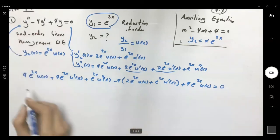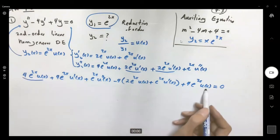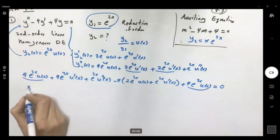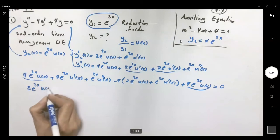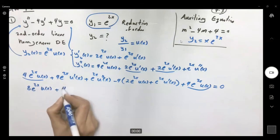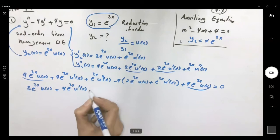So let us distribute negative 4 into parentheses. Here we have these two that becomes 8 e to 2x u of x. Then we have 4 e to 2x u prime of x.